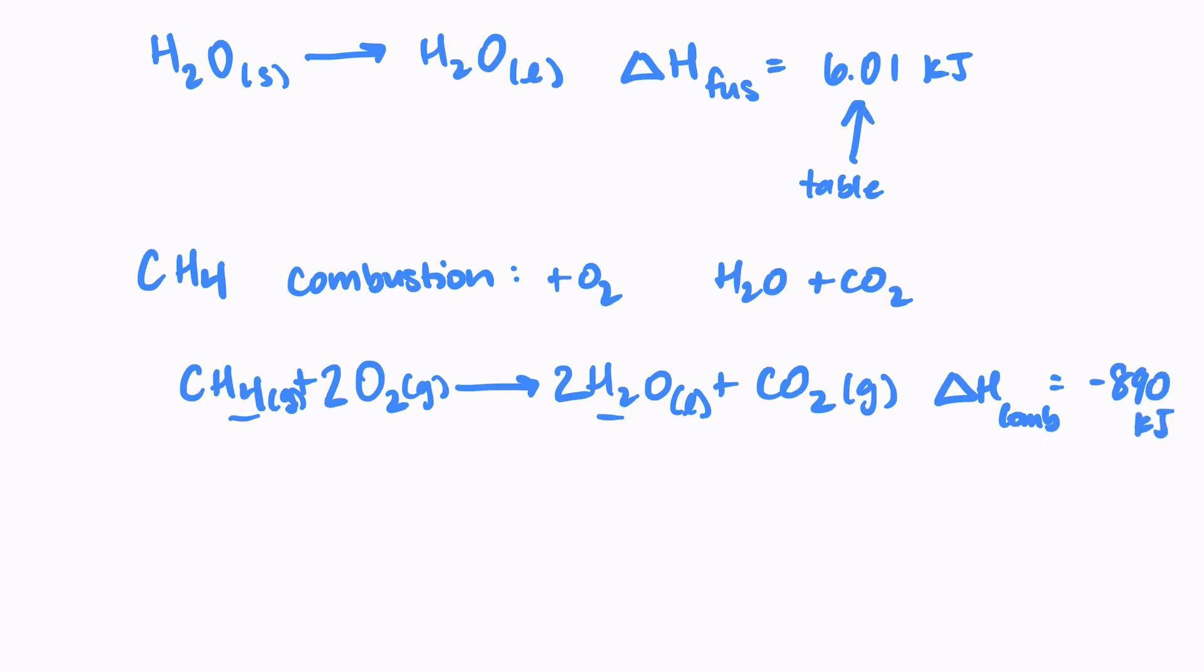And let's look for a second. We have 6.01 positive and 890 negative. So one thing that you do need to know is that with an enthalpy change, if it is a negative value, that means it's an exothermic reaction. It's releasing heat. 890 kilojoules of energy was lost to the surroundings. It exited the system.